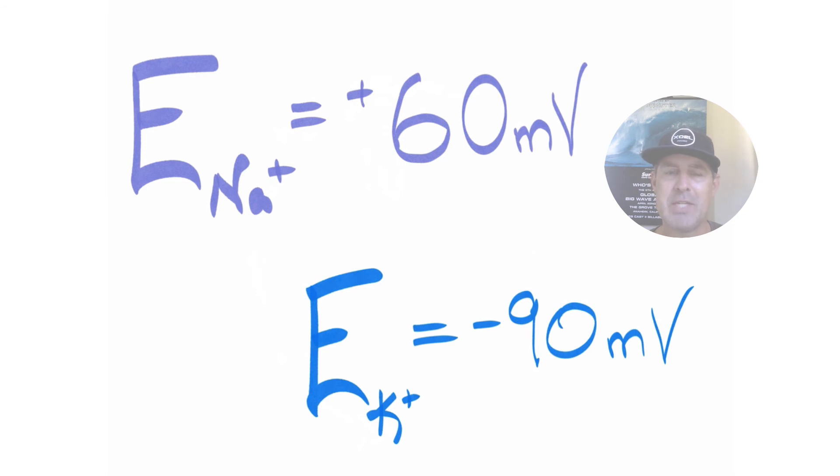In review, sodium's equilibrium potential is positive 60. That's the point at which sodium will no longer move into the cell down its chemical gradient. Potassium's equilibrium potential is negative 90. That's the point at which potassium will no longer leave the cell down its chemical gradient.